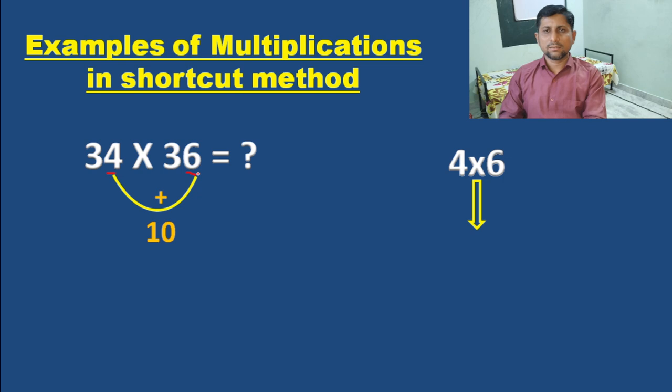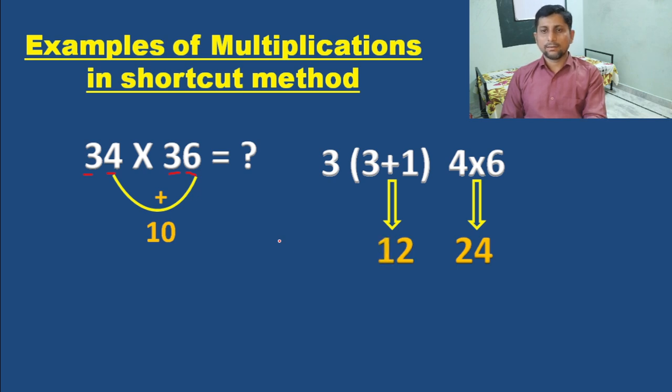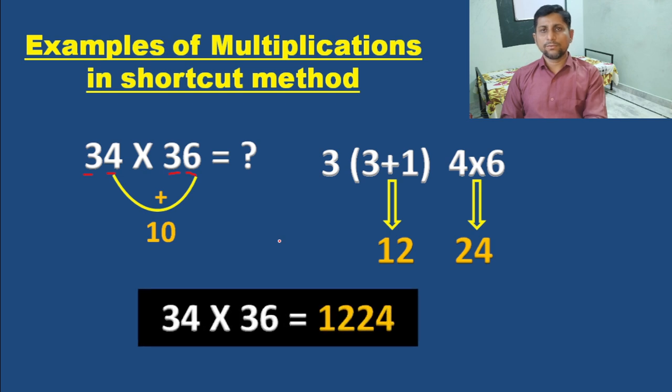If the addition of unit digits is 10, then just multiply the unit digits first: 4 into 6, we will get answer 24. Then think about the tens place digits. Here the tens place digits are equal, so think about the next digit - what will come before 24? 3 and its consecutive number, that is 3 plus 1 equals 4. So 3 and its consecutive number 4, we will get the product 12.